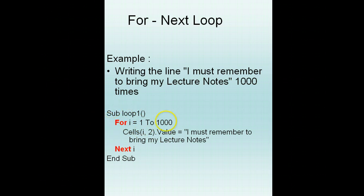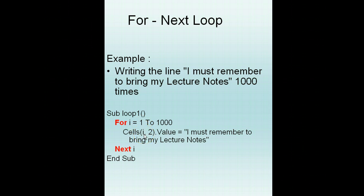Each iteration executes: cells(i, 2).value = 'I must remember to bring my lecture notes'. What happens is i will start from 1, so cell row 1, column 2, the value will be 'I must remember to bring my lecture notes'.